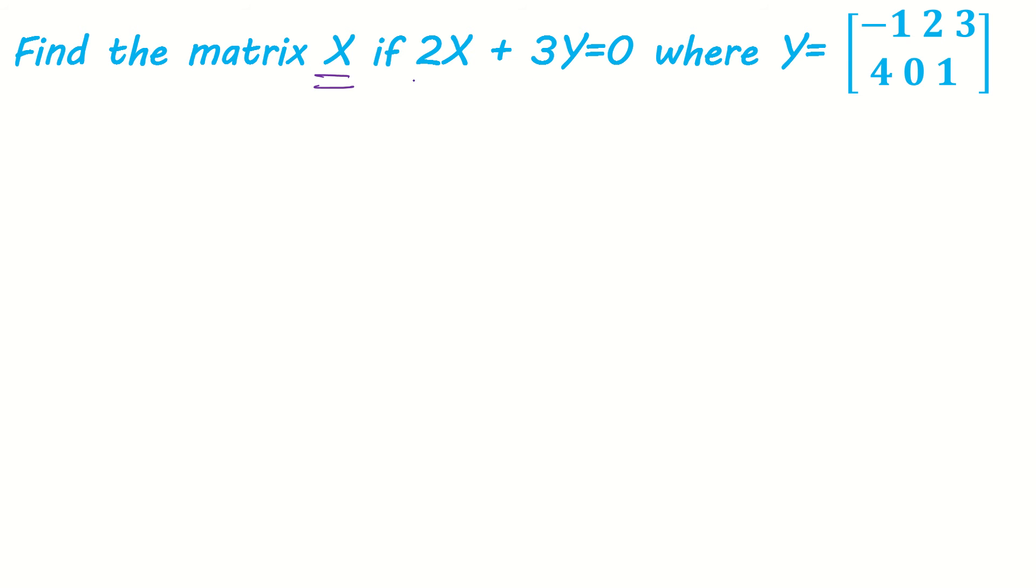Let us start. We have to find the matrix X. They have given us an equation and they have given us Y. Let us write the equation which they have given us: 2X plus 3Y equals 0. From here I can write 2X is equal to minus 3Y.